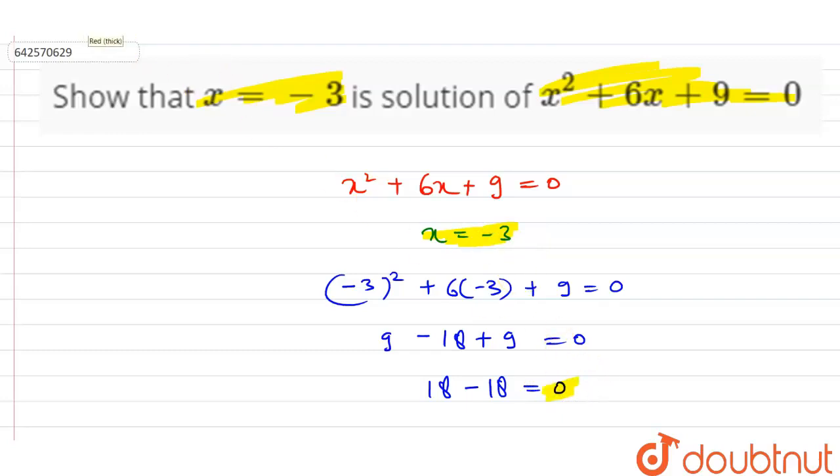That means we can say that x = -3 is the solution of the equation, or you can say that x = -3 is the root of the equation. Okay, thank you.